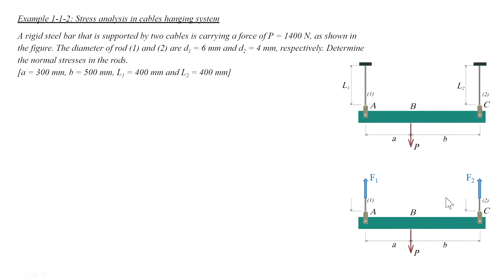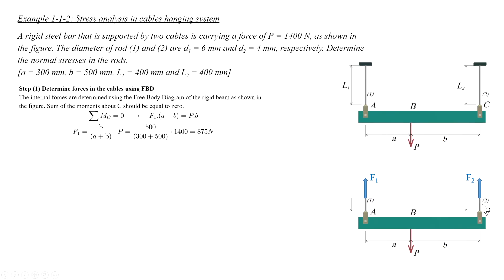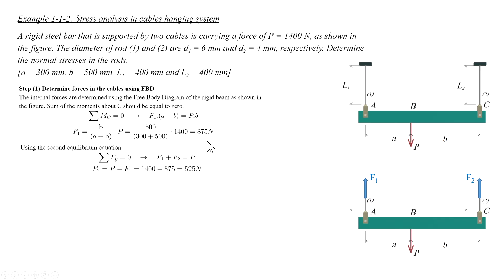We use equilibrium equations to determine the forces. The first equation is the sum of moments about C: F1 multiplied by its distance to C, which is A plus B, equals force P multiplied by its distance to C, which is distance B. We solve for F1 to determine the force in that cable. Then, to determine F2, we use the second equation — the sum of forces in the y direction — to find the force in the second cable.